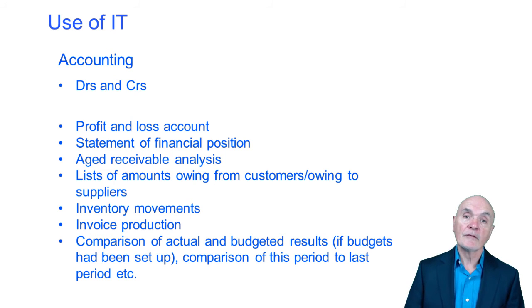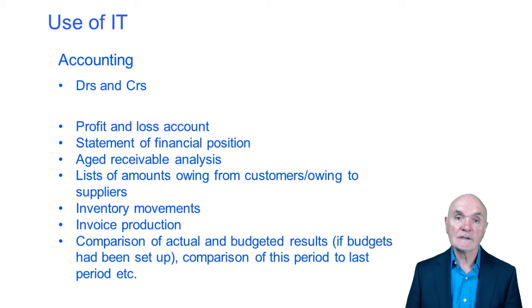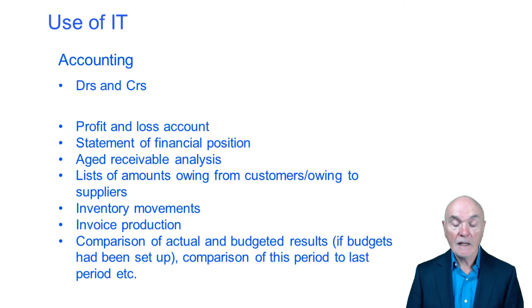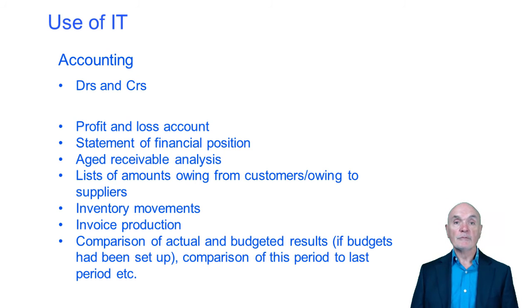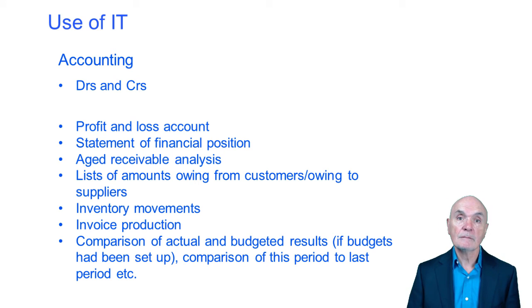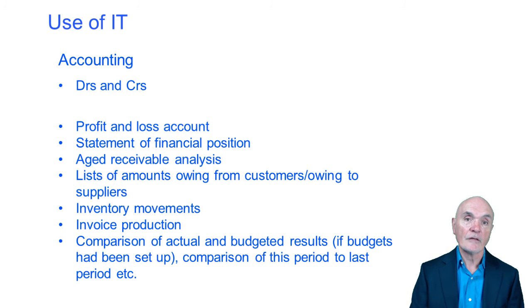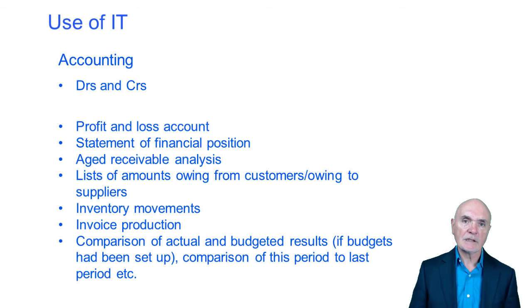At the touch of a button, you can get a profit and loss account or a statement of financial position. If you have put all your invoices in, you can very quickly get an aged receivables listing without having to manually sort everything into age categories. You can track inventory movements — for example, inventory that hasn't sold for the last three months that you may need to get rid of. You can also use it to produce invoices automatically, handling the multiplication, pricing, VAT, and totalling without manual checking.